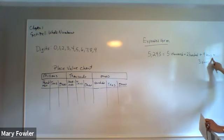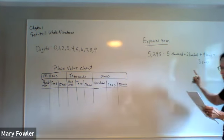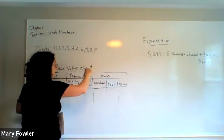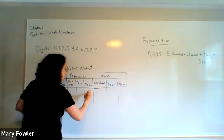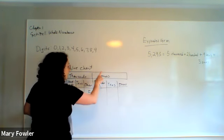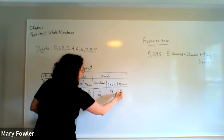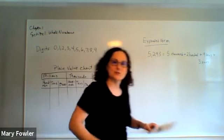Five thousand plus two hundred plus nine tens plus three ones, and we can come over to the place value chart and find: five thousand, how many hundreds? Two hundreds, nine tens, and three ones.